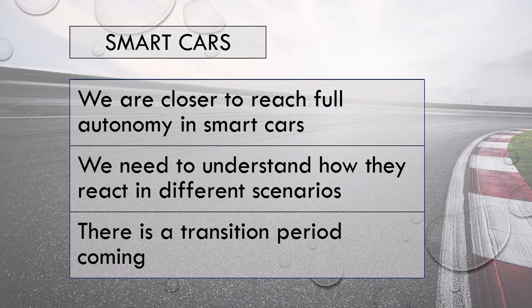Basically we will be doing everything in that environment. It's important to remember that the environment allows us to create traffic, to put several cars on the road, and we can also put human drivers. What we are going to do is simulate what is called the transition period — where in the future we will have smart cars but people are not going to stop driving immediately, so there will be a mix of smart cars and human drivers.